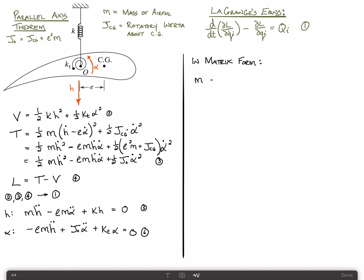And that looks like m, minus e m, minus e m, j zero. This is times h double dot, alpha double dot, plus k zero, zero k sub t. This is h alpha. Call this equation seven. And that's it.